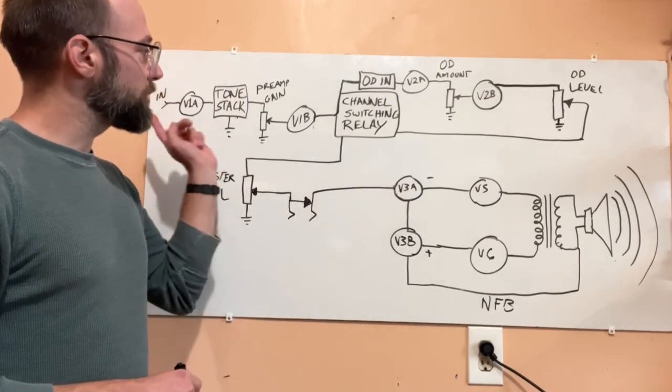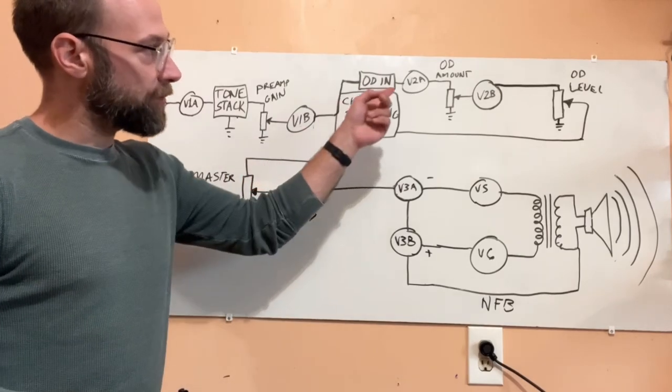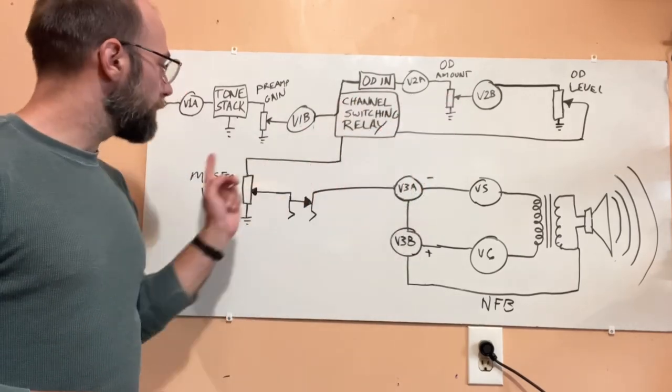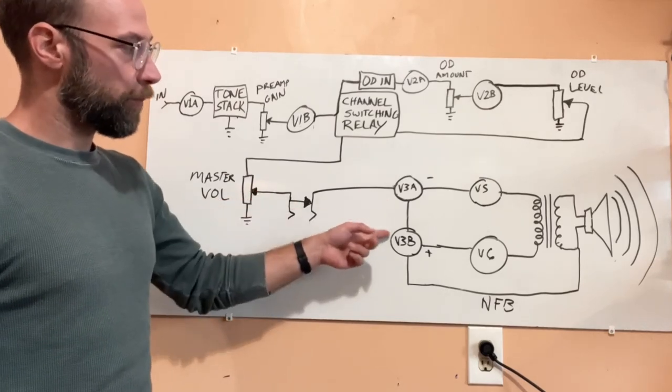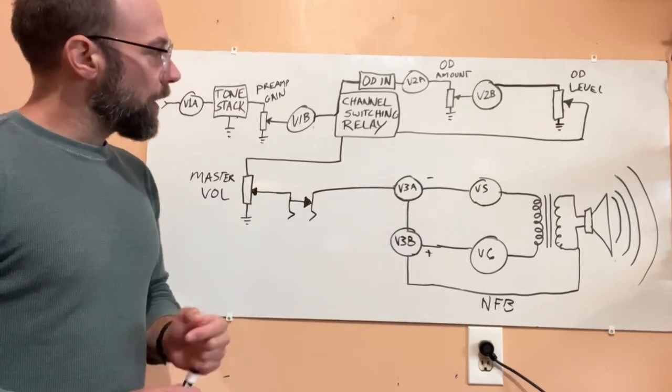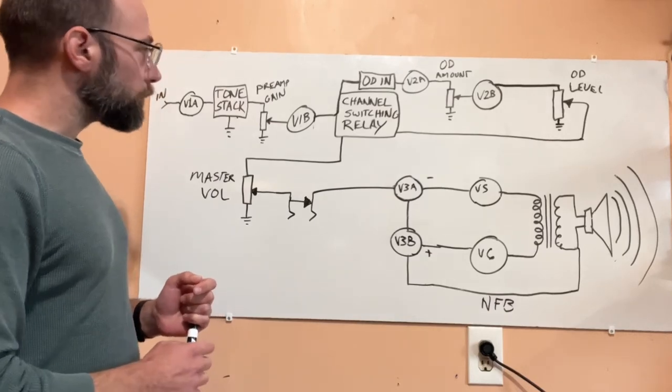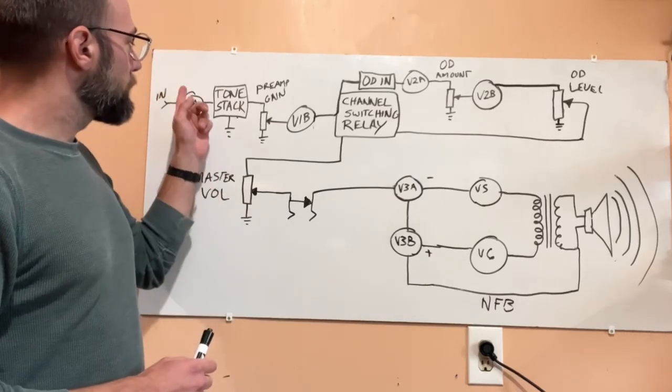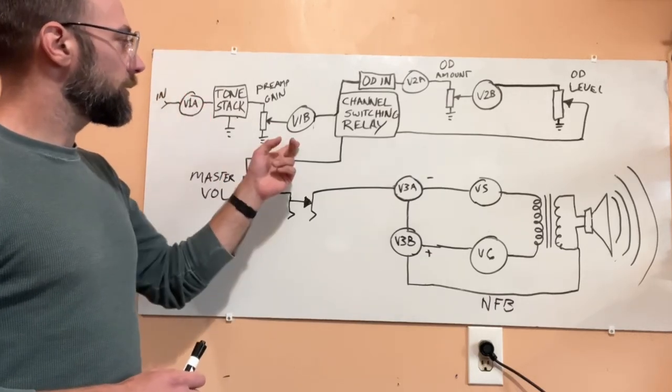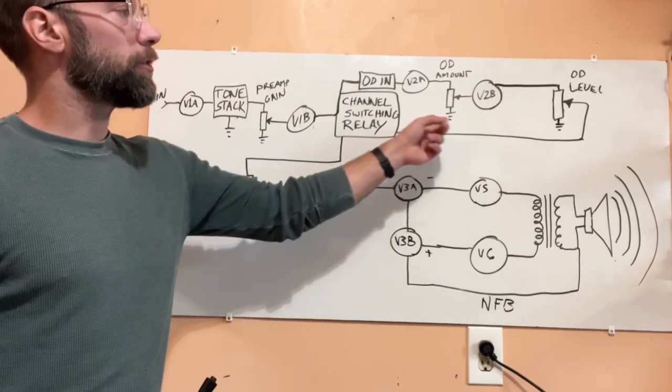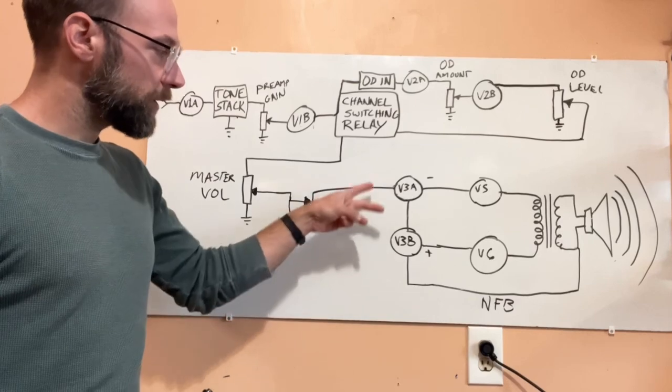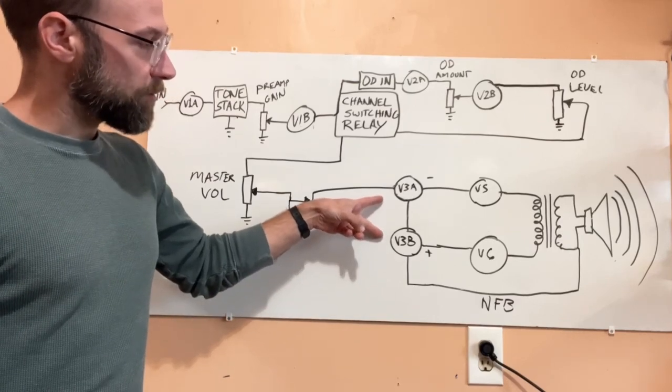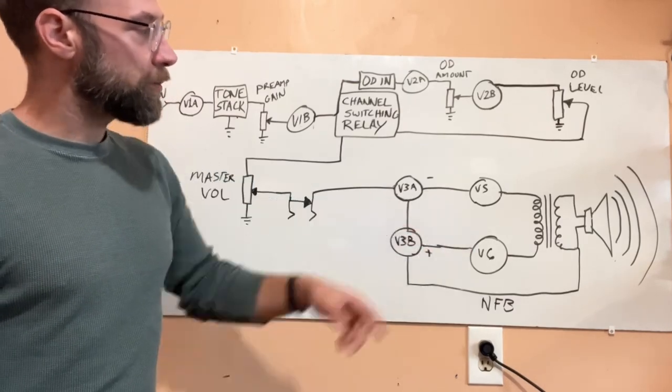And then the master volume is after the channel switching relay before it hits the phase inverter and the power amp. So you have your first tube stage here as the clean channel. Your second tube, second 12AX7, is the overdrive channel. The third one is your phase inverter and then these are your two power tubes.